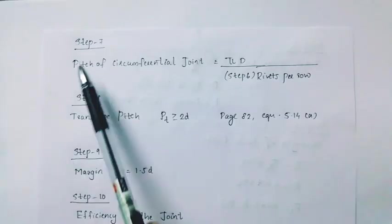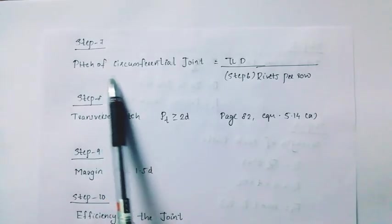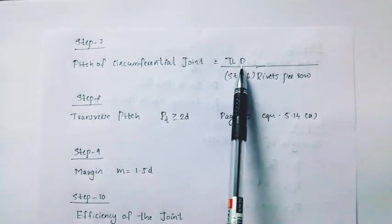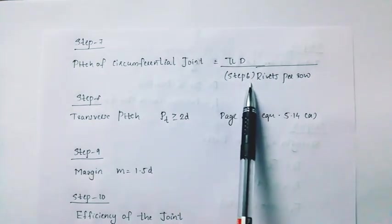Step 7. Pitch of circumferential joint equal to pi into D divided by step 6.